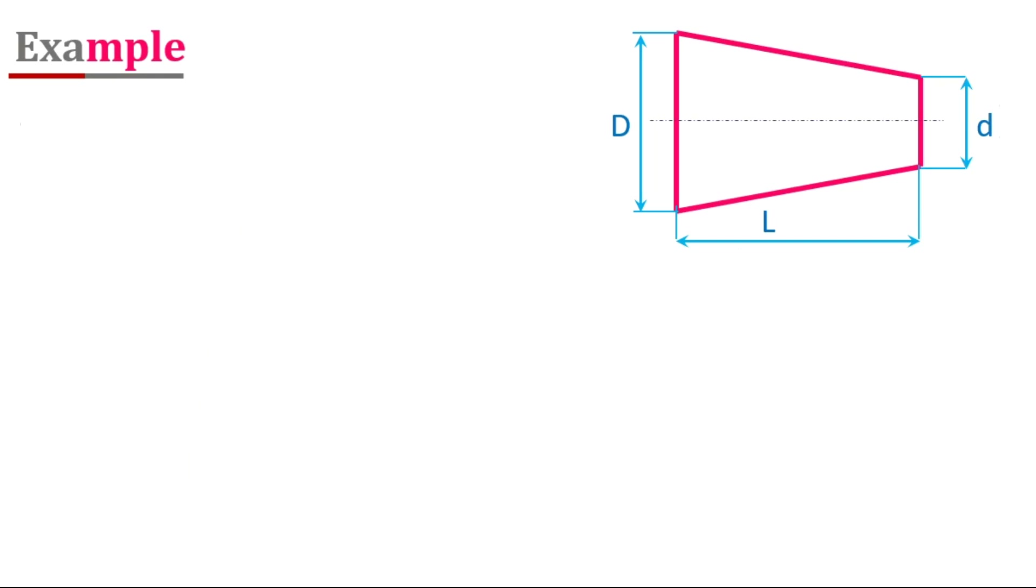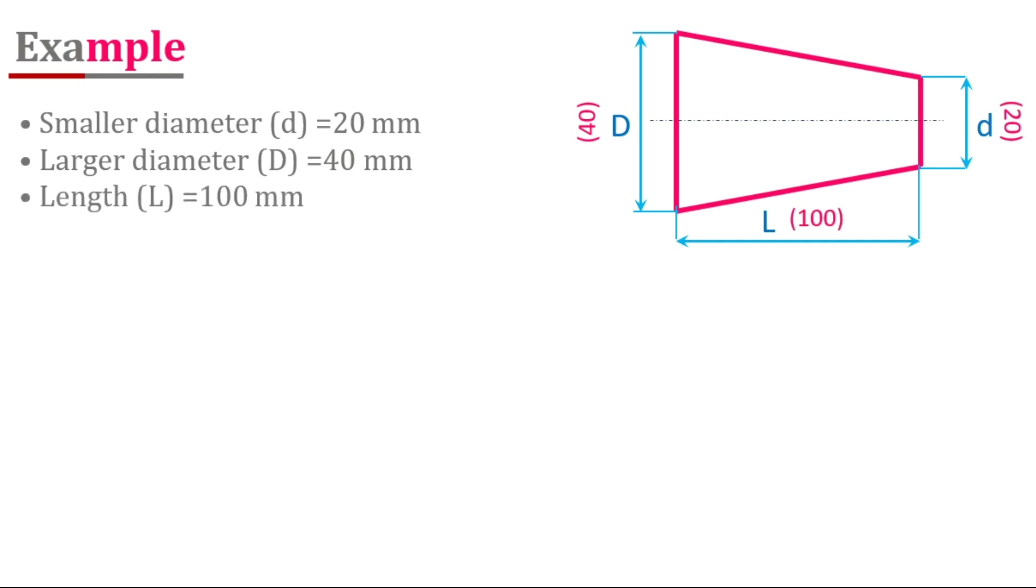Example: Let's see. Larger diameter D equals 40 mm, smaller diameter d equals 20 mm, length L equals 100 mm.